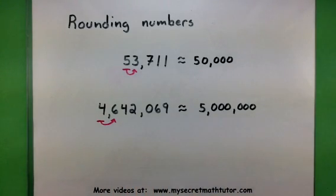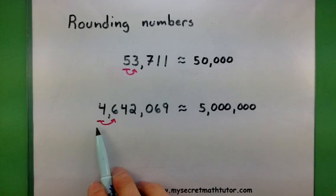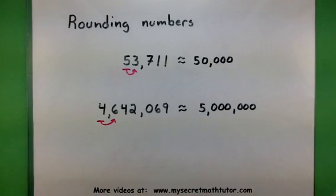And there you go. So all you really have to do is identify your place value, check the number to the right, and then round appropriately.